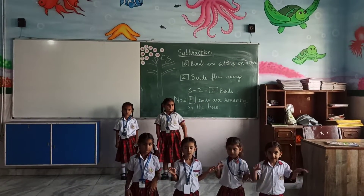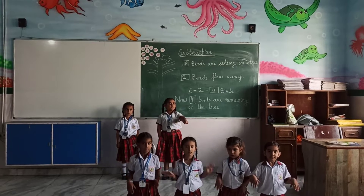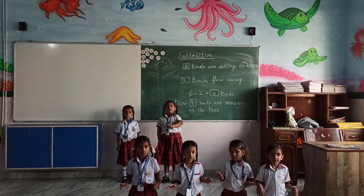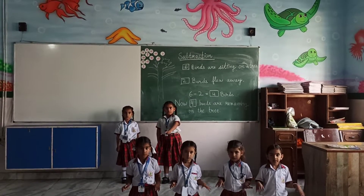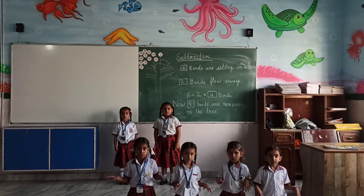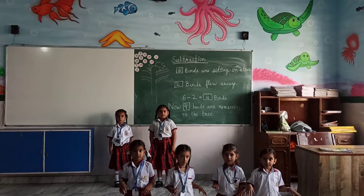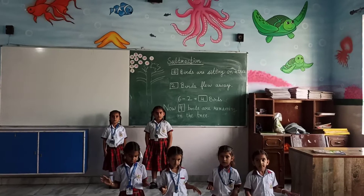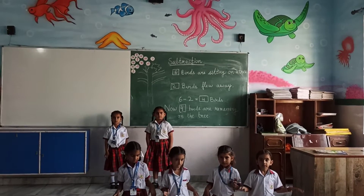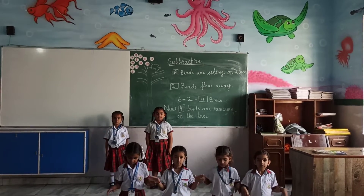Rashmid, count? One. Two. Three. Four. How many birds? Four birds. Yes. Four birds are remaining on the tree.